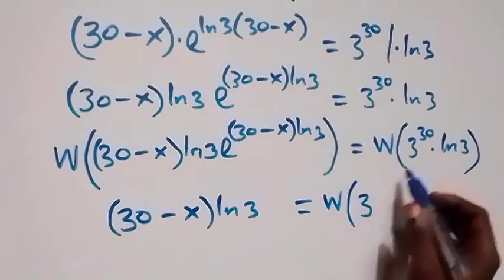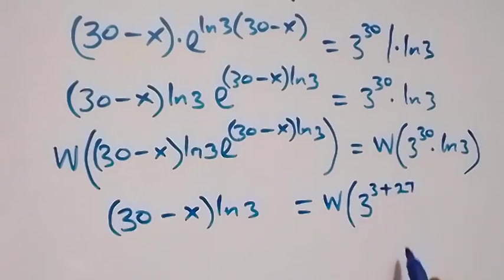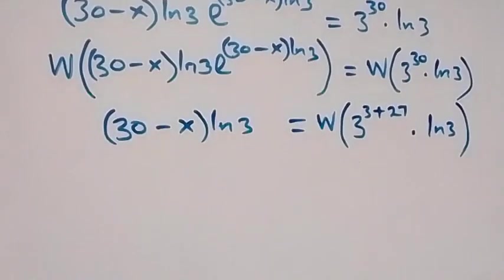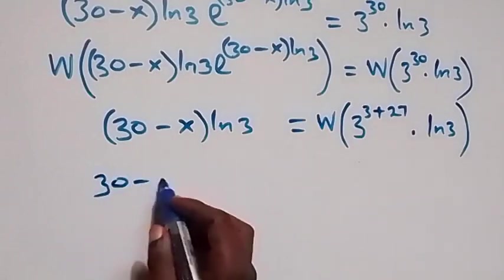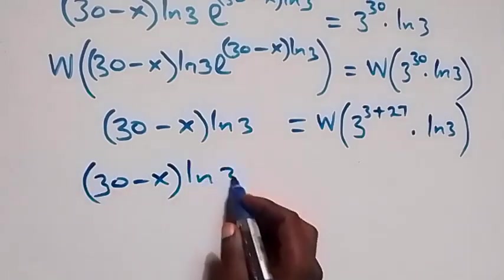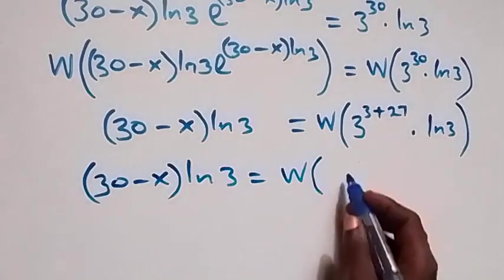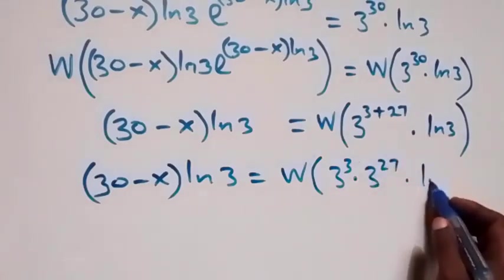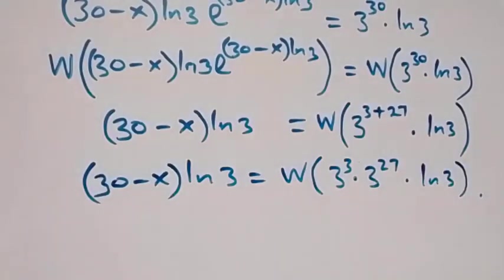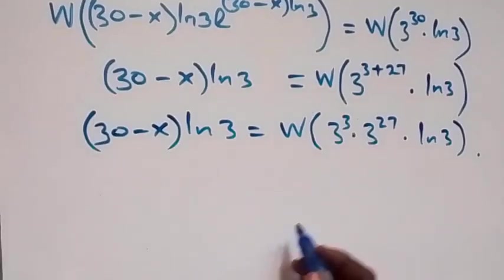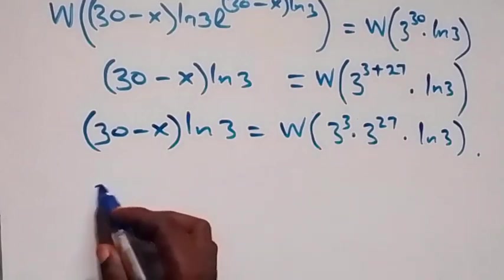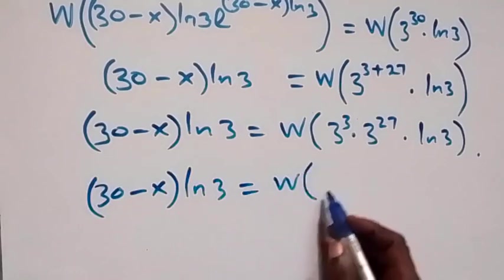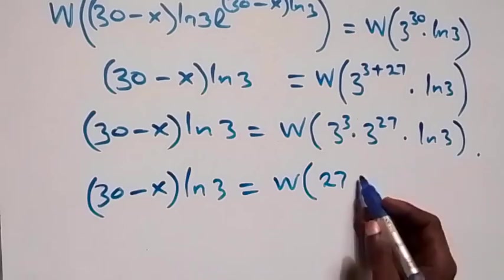We can also write 3 raised to power 30 as 3 raised to power 3 plus 27, which is also 30. Then times ln 3. When we separate this from the law of indices, we get 30 minus x times ln 3 equals W of 3 raised to power 3 times 3 raised to power 27 times ln 3, which equals W of 27 times ln 3 times 3 raised to power 27.